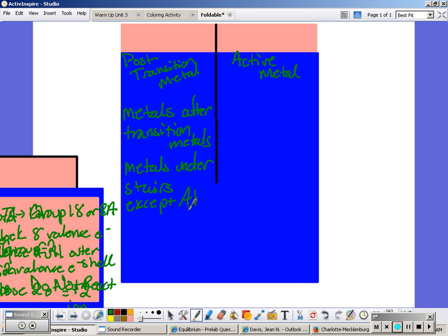Post-transition metals also have similar properties to the inner transition metals which have similar properties to the transition metals. So all three of those, anytime you see transition in the name, they have various charges that can be formed and they have colored ions.